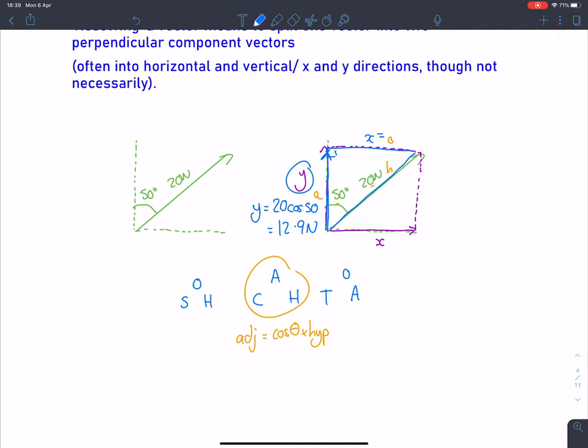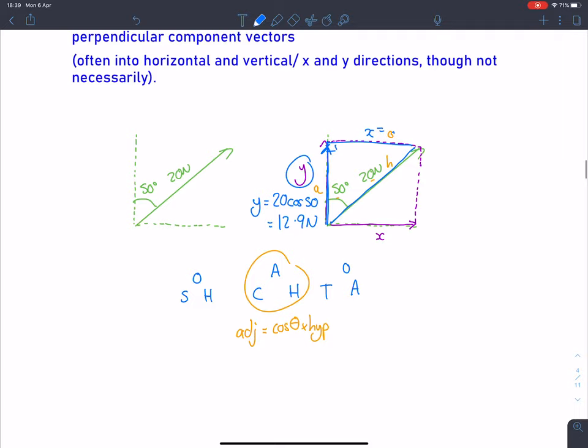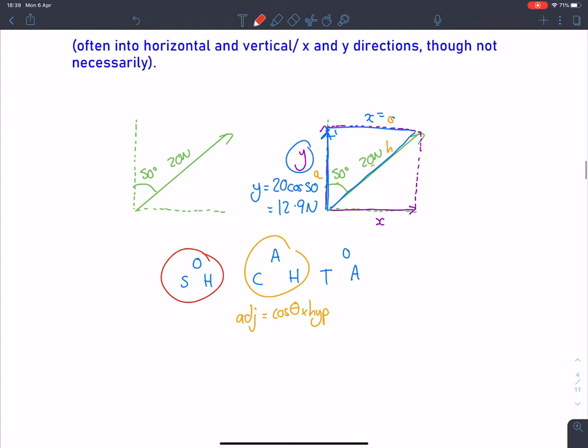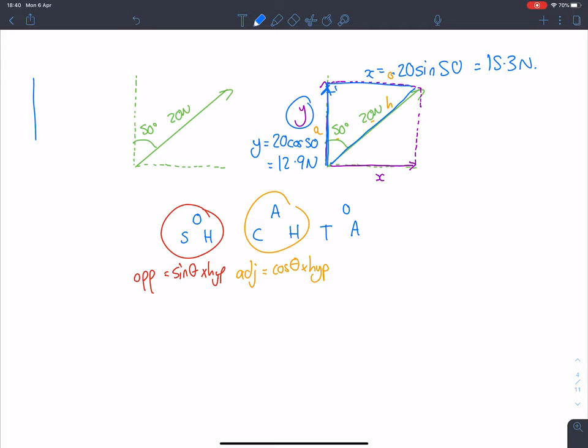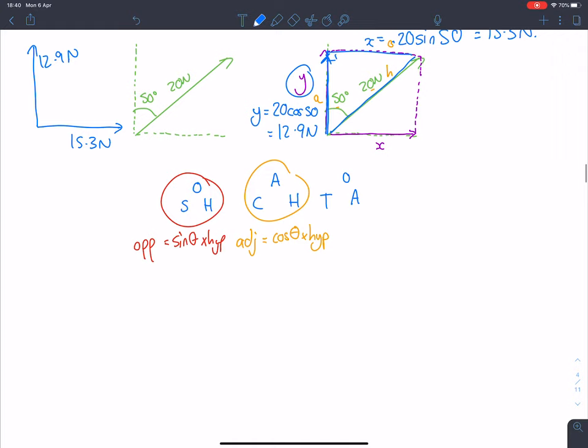What about the top one? I've got the hypotenuse and the angle, and I want to find the opposite here. So that's going to be SOH. For that one, opposite equals sine theta times hypotenuse. I'm going to have x equals 20 times sine of 50, which equals 15.3 newtons. So what I've done here, I've got this one vector, and I could represent that with two perpendicular vectors of 12.9 upwards and 15.3 to the right. So what I've done there, I've split that 20 newton vector into its vertical and its horizontal component. And this is what we call resolving vectors.